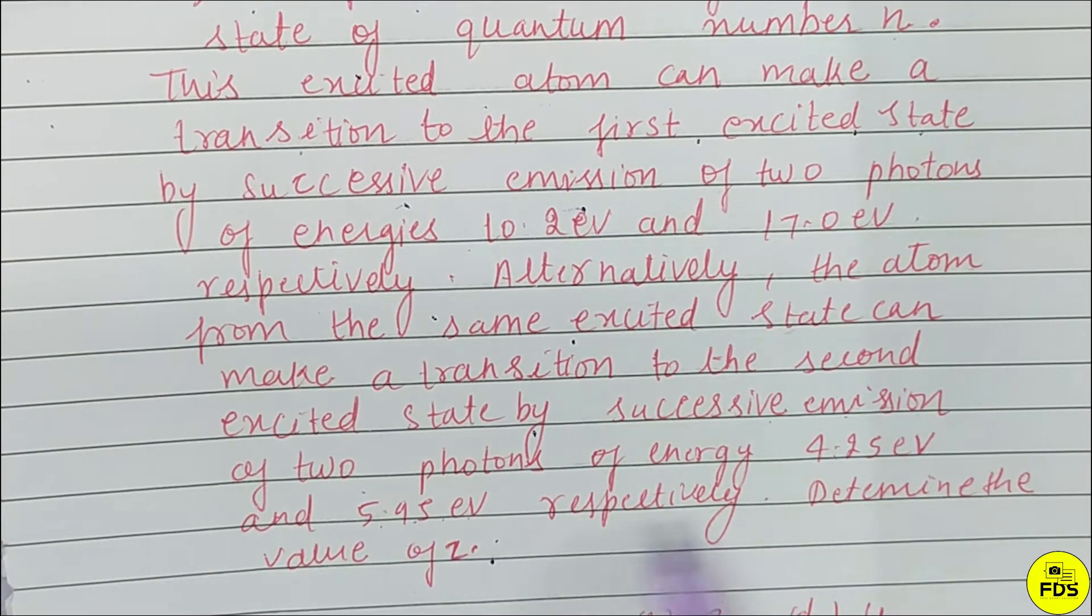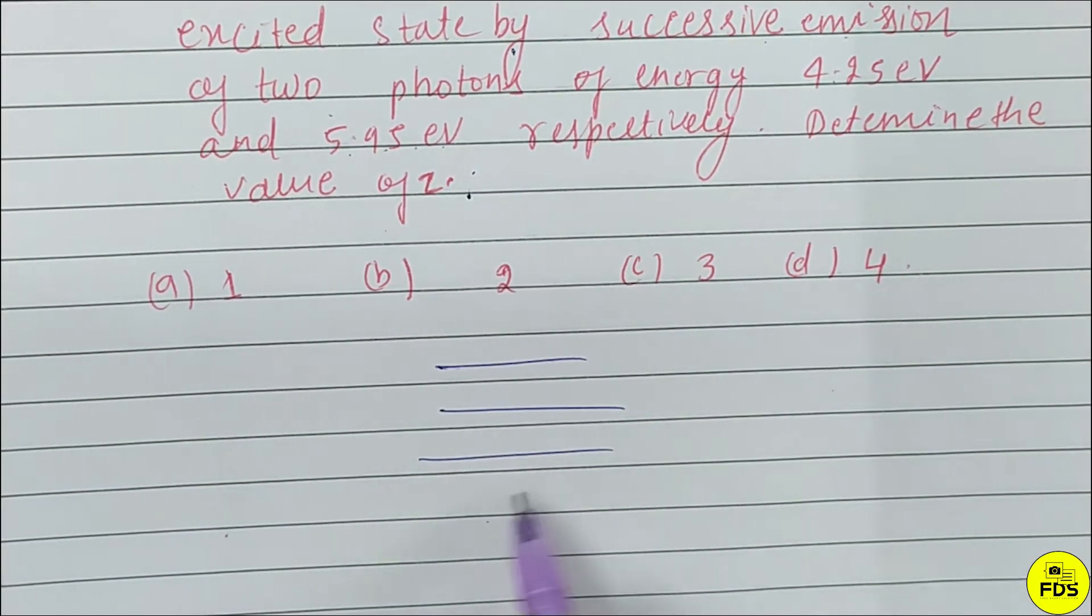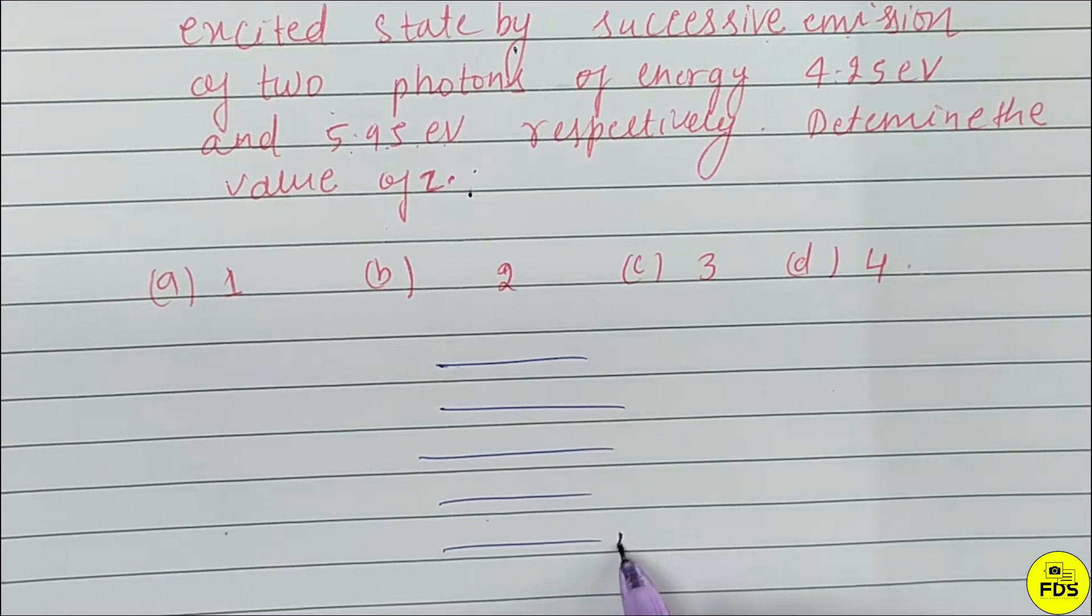Determine the value of Z. This is a spectral line problem with transitions 1, 2, 3.